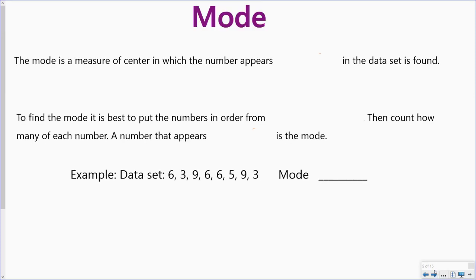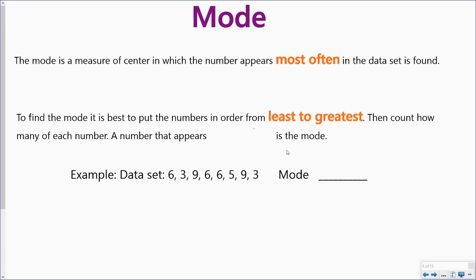The first one we're going to look at is the mode. The mode is a measure of center where the number appears most often in the data set. To find the mode, it is best to put the numbers in order from least to greatest and count how many of each number there is. The number that appears most often is the mode.